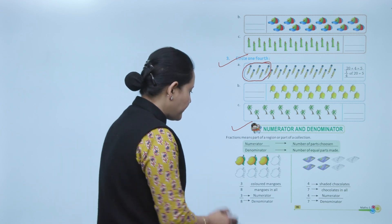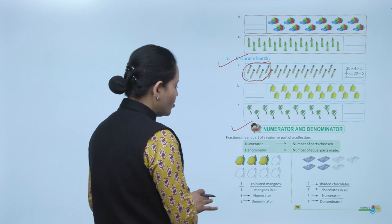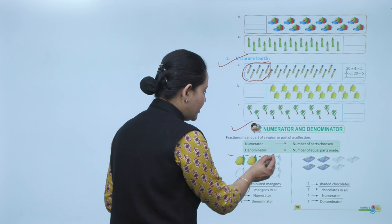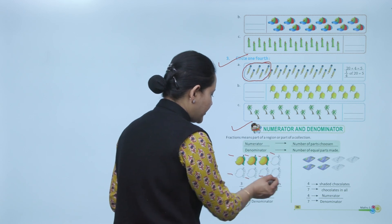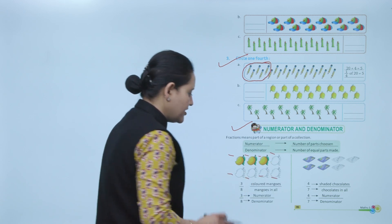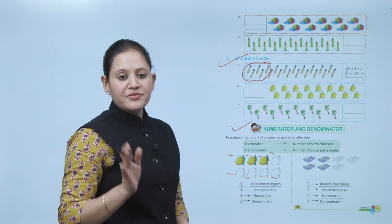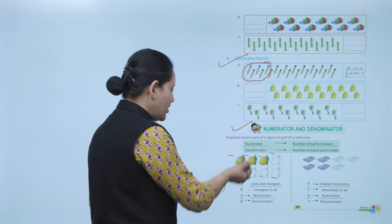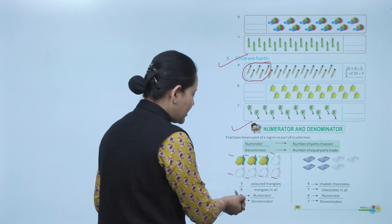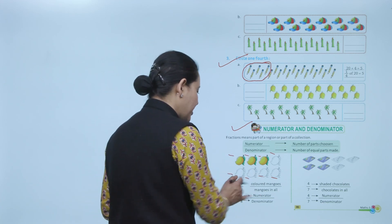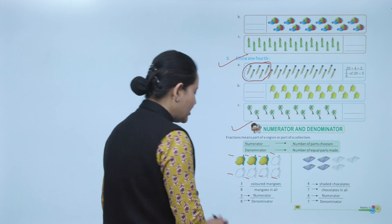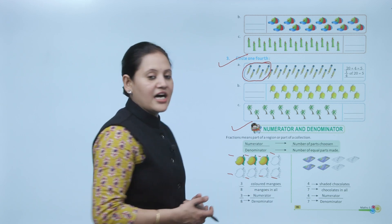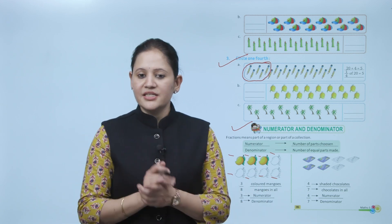Here, in this picture, total number of mangoes: 1, 2, 3, 4, 5, 6, 7, 8. Out of that, 3 are colored, so the fraction is 3 upon 8. Here 3 represents the colored mangoes and 8 represents the mangoes in all. So 3 is the numerator and 8 is the denominator.